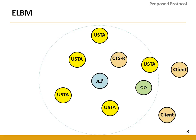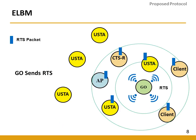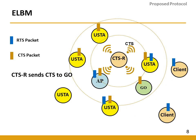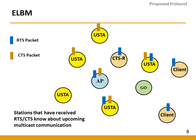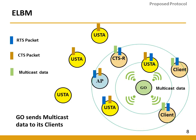I will explain the working of ELBM with the help of this animation. In this scenario there is one AP in blue, a few unicast stations in yellow which communicate with the AP, one group owner in green, and three clients in brown. First, the group owner chooses the client closest to the AP as CTSR, which will send CTS back to the group owner. The group owner sends RTS to the CTSR using an enhanced RTS-CTS scheme, the CTSR sends CTS, and all stations that heard either RTS or CTS know about the upcoming multicast transmission. The group owner then sends multicast data to its clients.